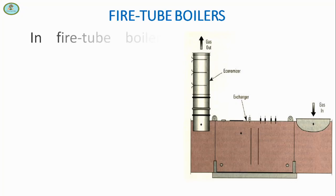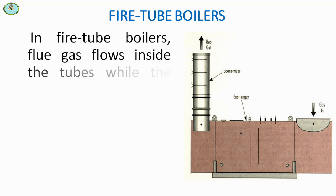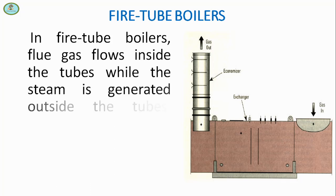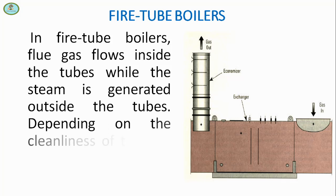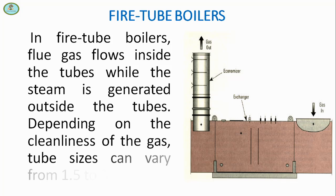In fire tube boilers, flue gas flows inside the tubes while steam is generated outside the tubes. Depending on the cleanliness of the gas, tube size can vary from 1.5 to 3.5 inch outside diameter.